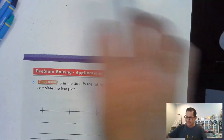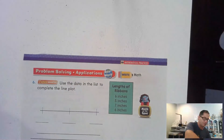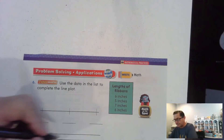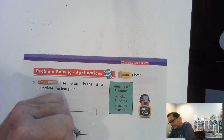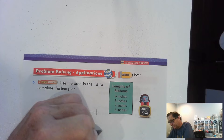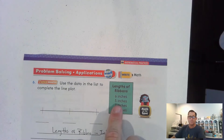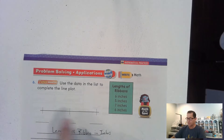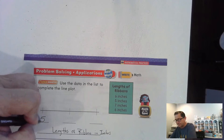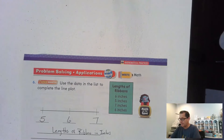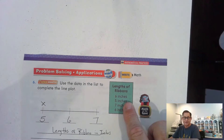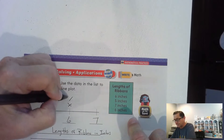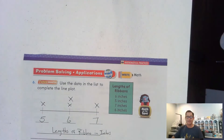For number six, we use the data from the table. Our title is 'Length of Ribbon in Inches,' and our numbers are five, six, and seven. I have one ribbon that is five inches long, two ribbons that are six inches long, and one ribbon that is seven inches long.